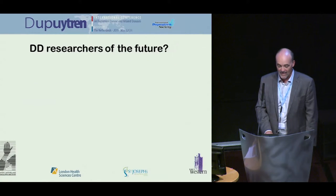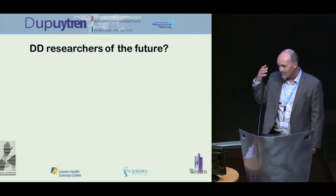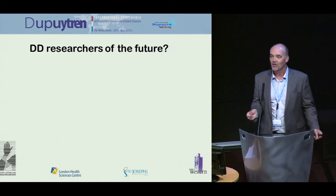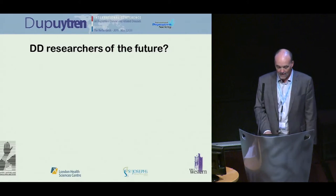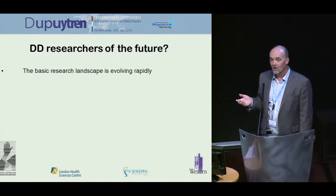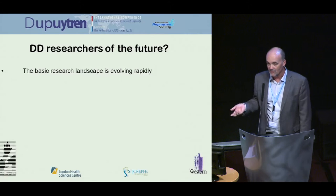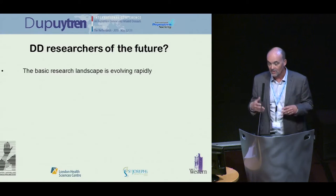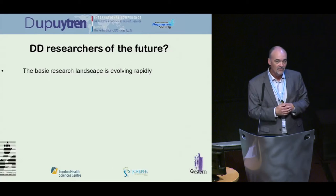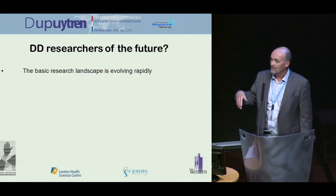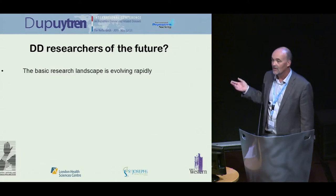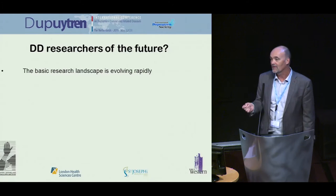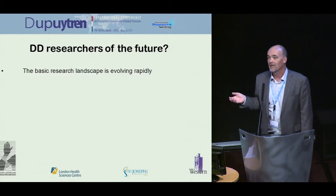We can then do reproducible studies to consistently identify potential new treatments — things that are very hard to do in people because people are so divergent. We want to use those models to design and reproducibly test new therapeutic interventions. The basic research landscape is evolving rapidly; there are changes in funding levels, we need to collaborate more, and the science is expanding enormously. We've already seen data coming out of genome-wide association studies.